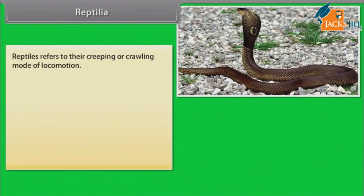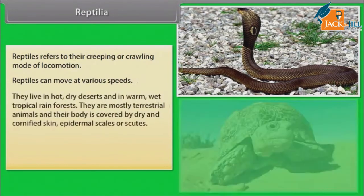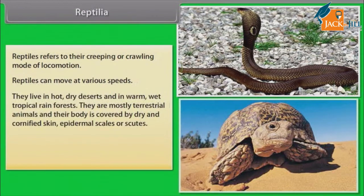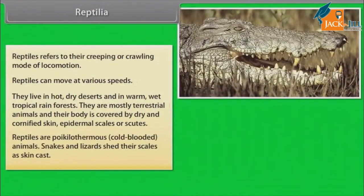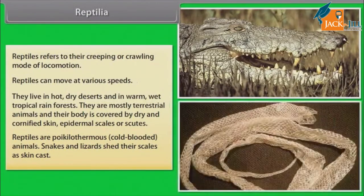Reptiles refer to their creeping or crawling mode of locomotion. They live in hot dry deserts and in warm wet tropical rainforests. They are mostly terrestrial animals and their body is covered by dry and cornified skin. Epidermal scales are called scutes. Reptiles are poikilothermous or cold-blooded animals. Snakes and lizards shed their scales as skin cast.